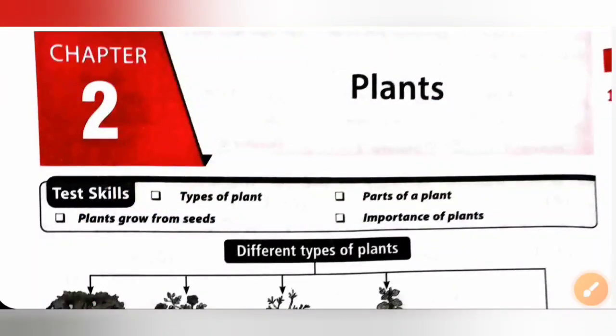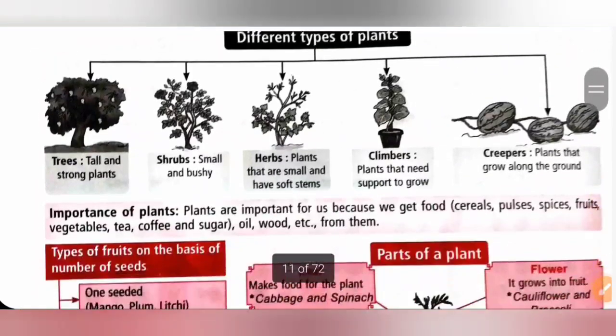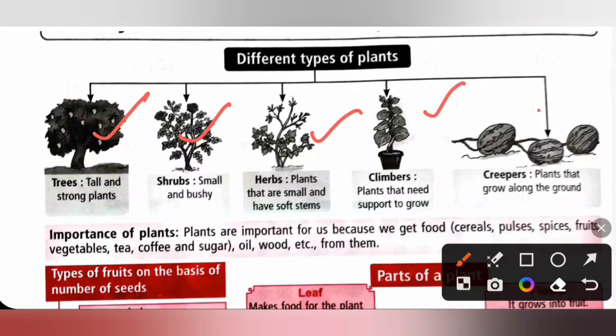Hi my dear kids, in this video we are going to see chapter 2, plants from MTG workbook of class 1 NSO. So there are different types of plants: trees, tall and strong plants; shrubs, small and bushy plants; herbs, plants that are small and have soft stems; climbers, plants that need support to grow; creepers, plants that grow along the ground.